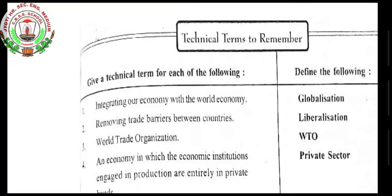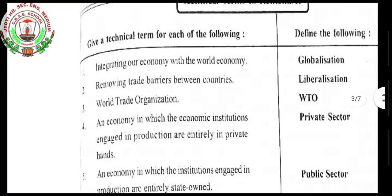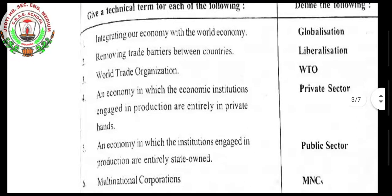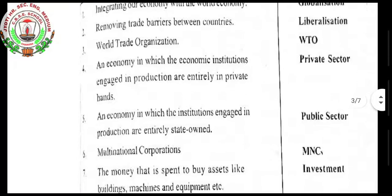Let us see some of the key technical terms in this chapter. First is globalization — integrating our economy with the world economy, connecting from one country to another. Second is liberalization — removing trade barriers between countries. WTO stands for World Trade Organization, which deals with trade, meaning business. Private sector refers to an economy in which economic institutions and production are entirely in private hands, while the public sector is entirely in the government's hands.